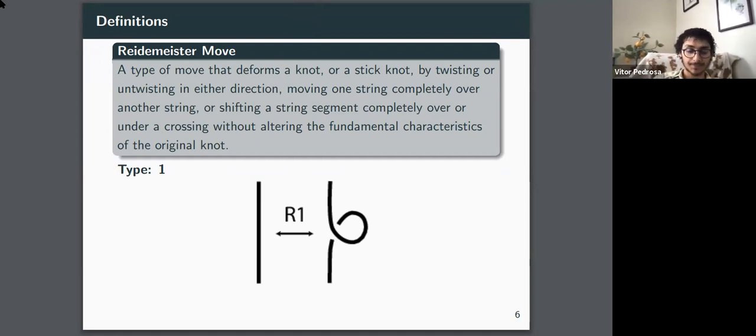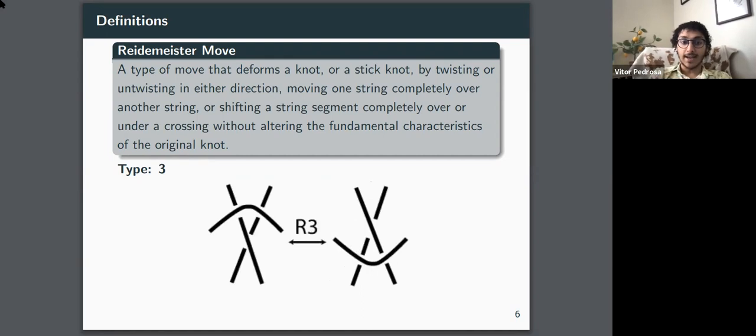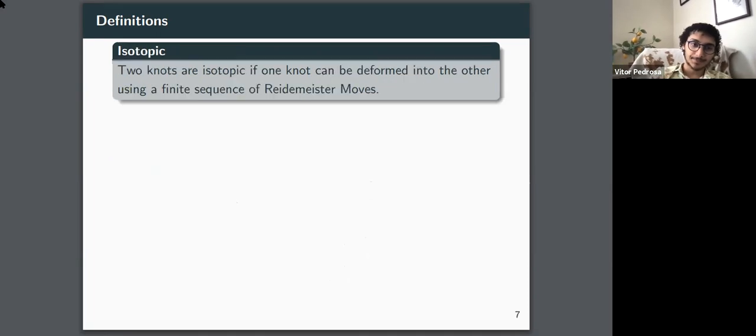The second one's called a poke, which pretty much means that you can poke a line segment over another one. And you can just undo that by moving it away. And the third type of Reidemeister move is called a slide, which means that you can slide a line segment over under a different knot. And it won't change the fundamental characteristics. Next slide, please.